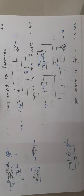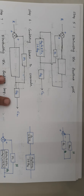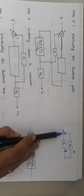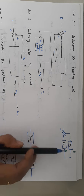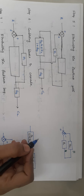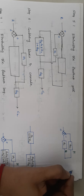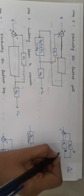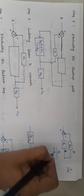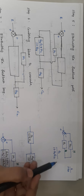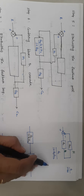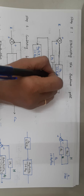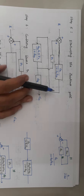Step number five is eliminating the feedback loop. Here G1 is the feed-forward element and the output of G1 is taken and given back to its input. G2 is the feedback element, and the type of feedback is negative. So the general formula is G divided by 1 plus GH. In the place of G we have G1, and in the place of H we have G2. So the result is G1 divided by 1 plus G1G2. Write this value in the diagram. This is step number five.